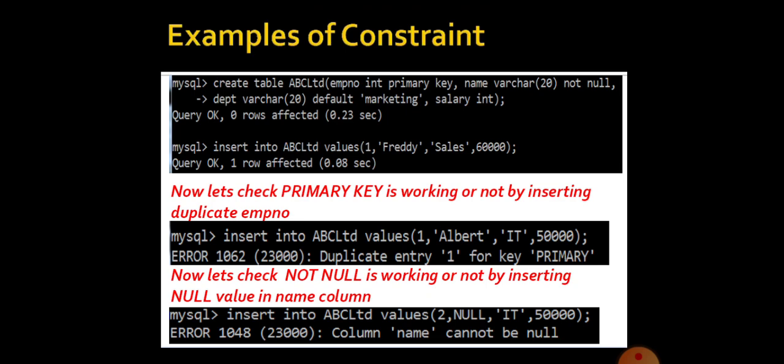Here we are going to create a table named ABC Ltd. EMPNO is a column which is having a primary key. Likewise, name is another column having a constraint as not null. And the third column is department which is having a constraint as default, having a value as marketing.